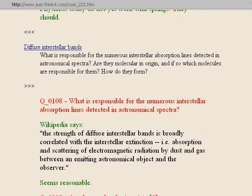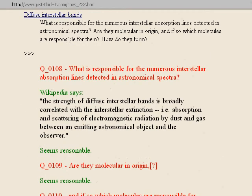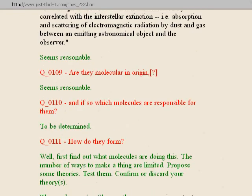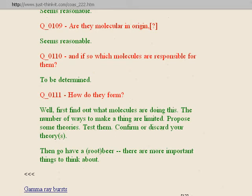Question one hundred and seven: why is the magnetic reconnection effect many orders of magnitude faster than predicted by standard models? Spring-in-Loop Theory imagines this process is one of the most spring-dominated processes there is. Springs are ultra energetic, far beyond particle energies. So it is easy to imagine such a process happening faster than less spring-dominated processes. Physicists today do not yet work with springs — they should. Next section: diffuse interstellar bands. What is responsible for the numerous interstellar absorption lines detected in astronomical spectra? The strength of diffuse interstellar bands is broadly correlated with the interstellar extinction, i.e. absorption and scattering, of electromagnetic radiation by dust and gas between an emitting astronomical object and the observer. That seems reasonable. Are they molecular in origin? Seems reasonable. Which molecules are responsible? To be determined. How do they form? First find out what molecules are doing this, propose some theories, test them, confirm or discard. Then go have a root beer.